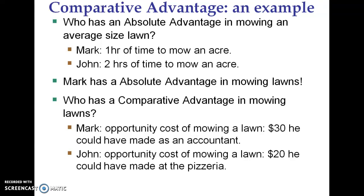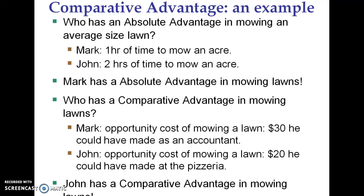So, who has a comparative advantage in mowing lawns? If you chose John, you're correct. He gave up only $20, whereas Mark's opportunity cost is $30. So John actually has the advantage in this case. John has a lower cost of mowing a lawn, and therefore he would be willing to do it at a lower price than Mark would.